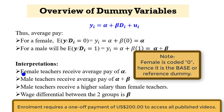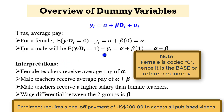The interpretation is very simple. From the analysis, female teachers receive an average pay of alpha. Male teachers receive an average pay of alpha plus beta. You can say that male teachers receive a higher salary than female teachers, and the wage differential between the two groups is beta. The interpretation is very straightforward.